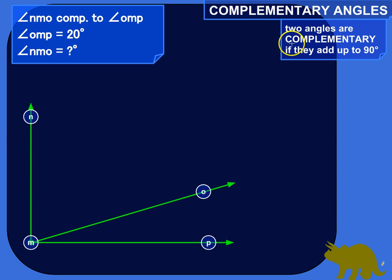Complementary angles add up to 90 degrees, they form a right angle, a 90 degree angle. So, we can use that information, or use that fact, to figure out a missing angle here.